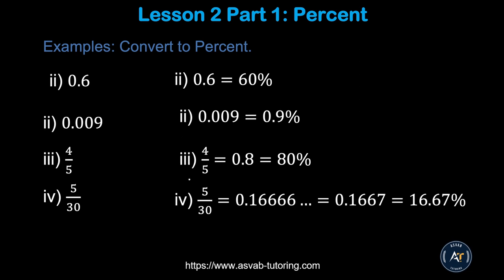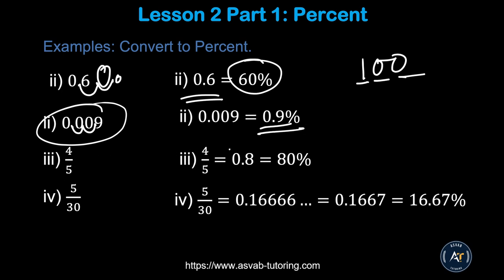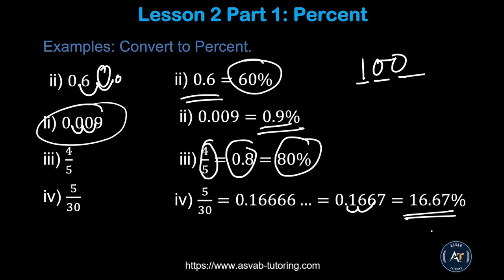Now, how to convert from decimal to percent — you do the opposite: move two decimal places from left to right, which means you are multiplying by 100. For example, 0.6 becomes 60%, and 0.9 becomes 90%. For fractions: four over five equals 0.8, move two decimal places to get 80%. Three over 50 equals 0.1666 repeating, so move two decimal places to get approximately 16.67%.